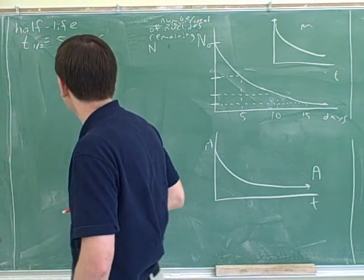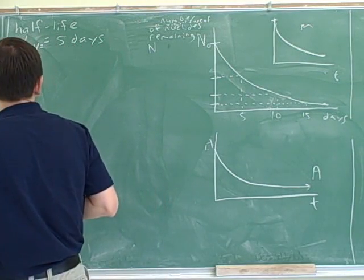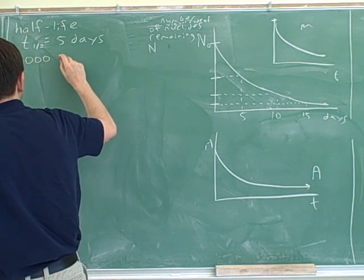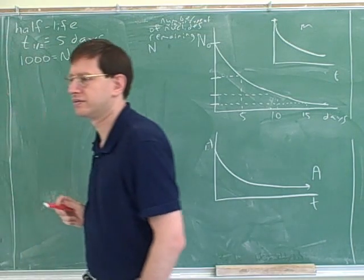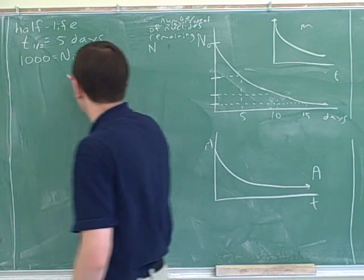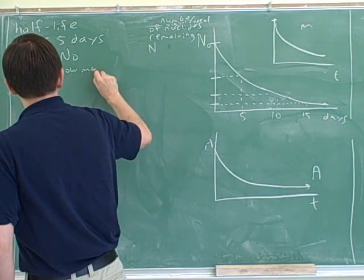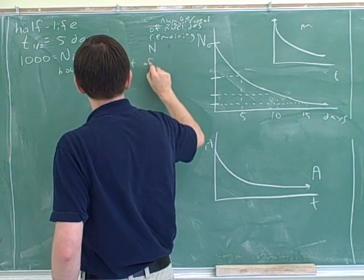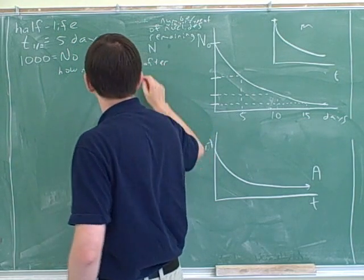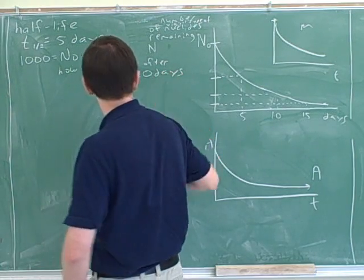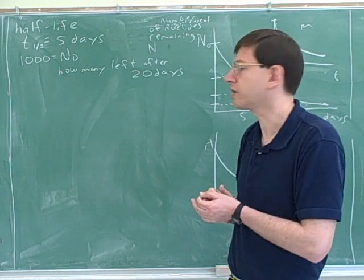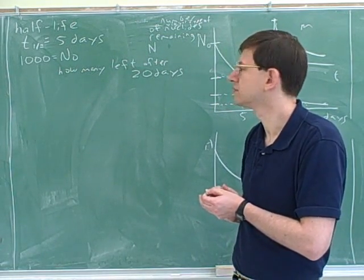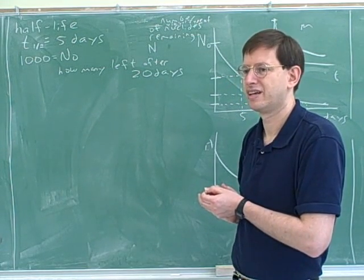So that's our concept of half-life. Let's say we start with a thousand nuclei. How many nuclei will we have left after 20 days? We can go through this together. It's going to be half of the one thousand, which will be five hundred, and that's at five days.